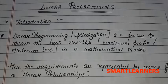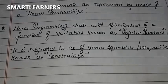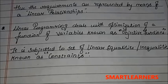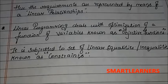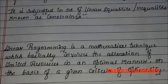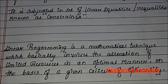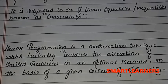Linear programming deals with the optimization of a function or variable known as the objective function. It is subjected to a set of linear inequalities and equalities known as constraints. These are the basic terminologies which we'll be discussing very soon. Linear programming is a mathematical technique which basically involves the allocation of limited resources in an optimal manner on the basis of given criteria of optimality.